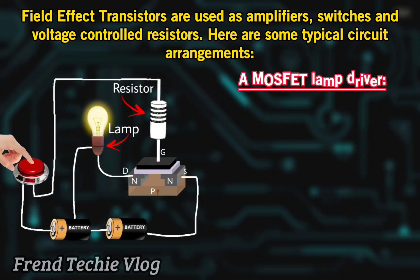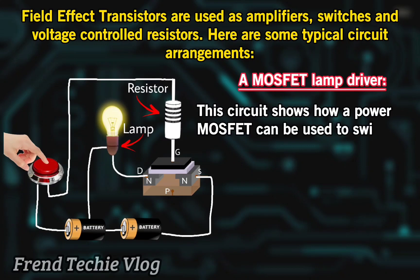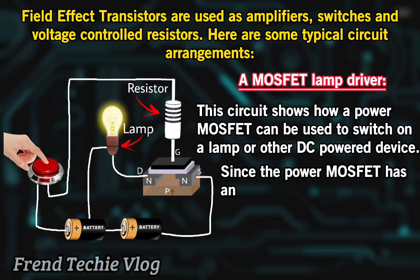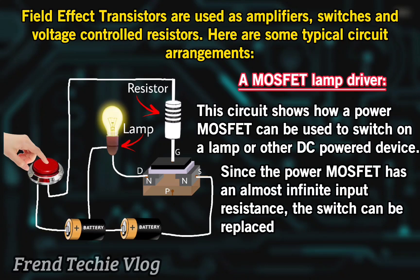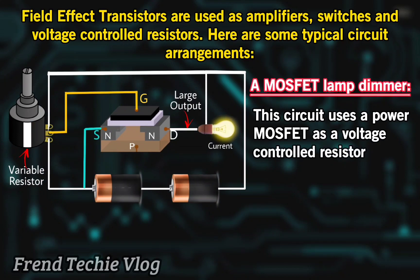A MOSFET lamp driver: this circuit shows how a power MOSFET can be used to switch on a lamp or other DC-powered device. Since the power MOSFET has an almost infinite input resistance, the switch can be replaced by a tiny input signal. A MOSFET lamp dimmer: this circuit uses a power MOSFET as a voltage-controlled resistor.